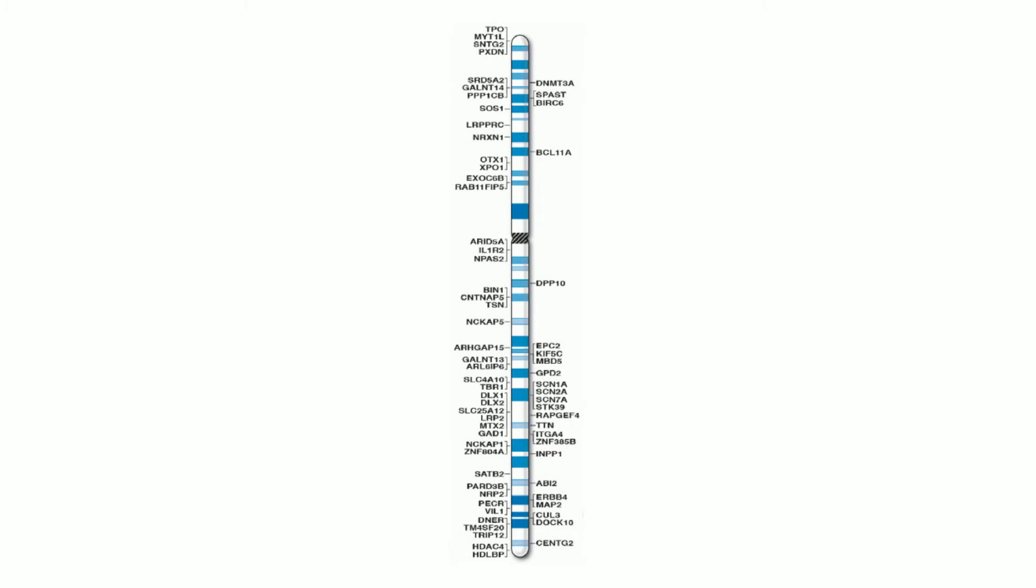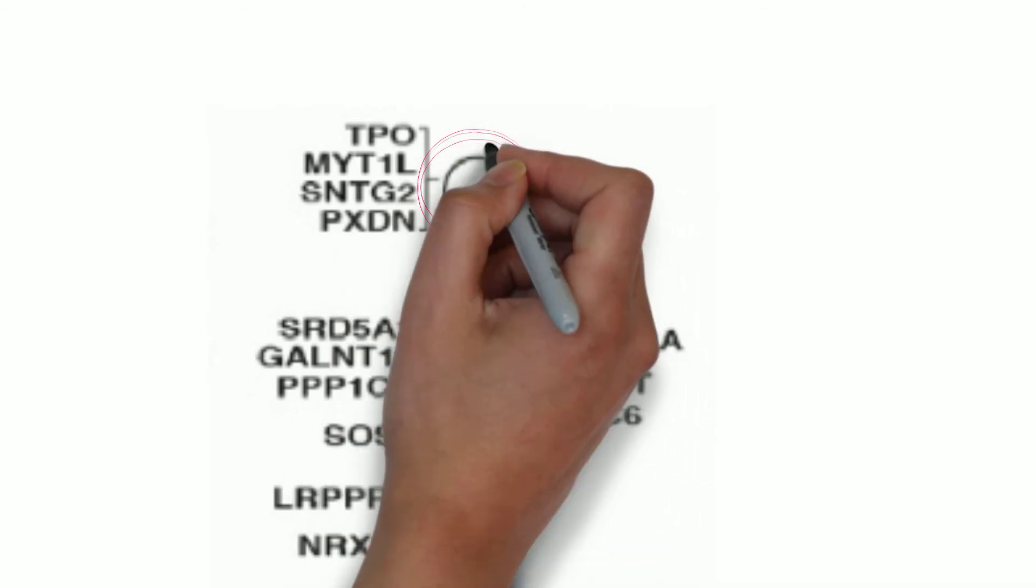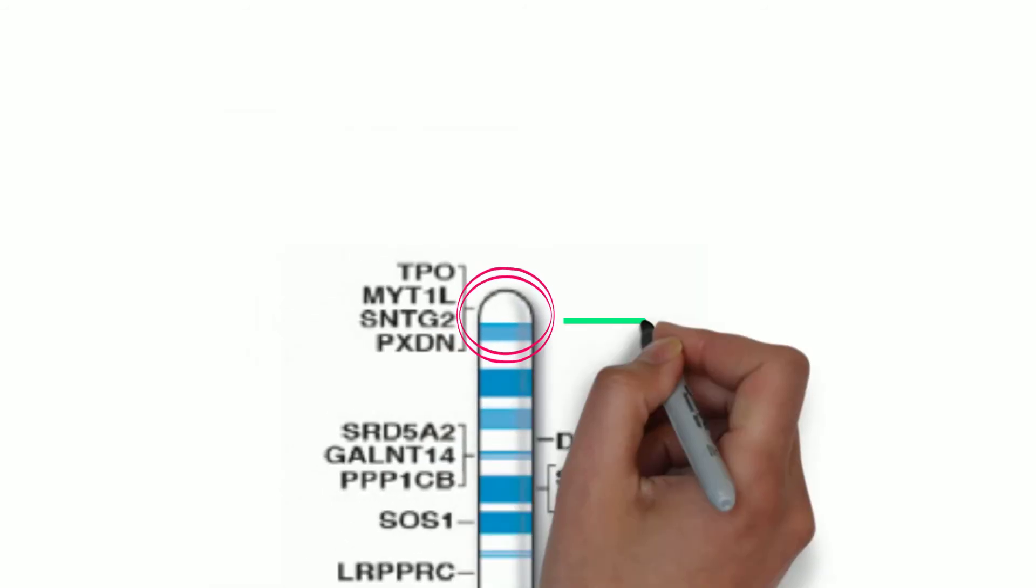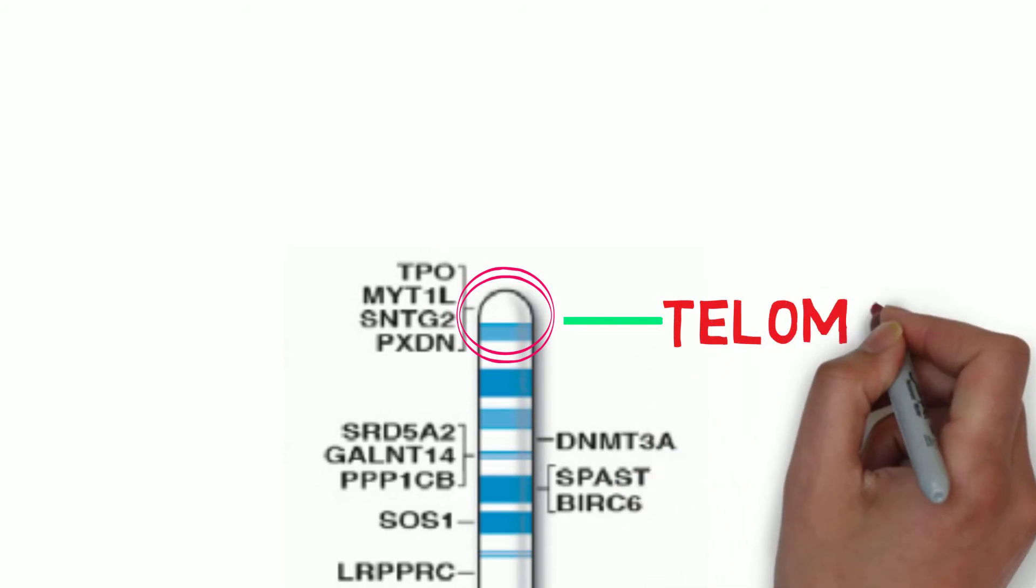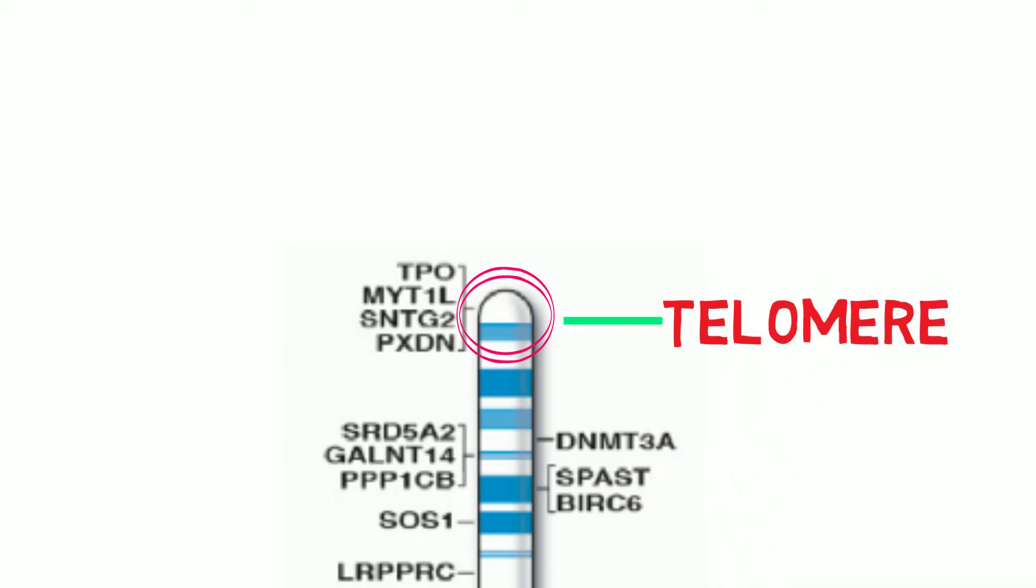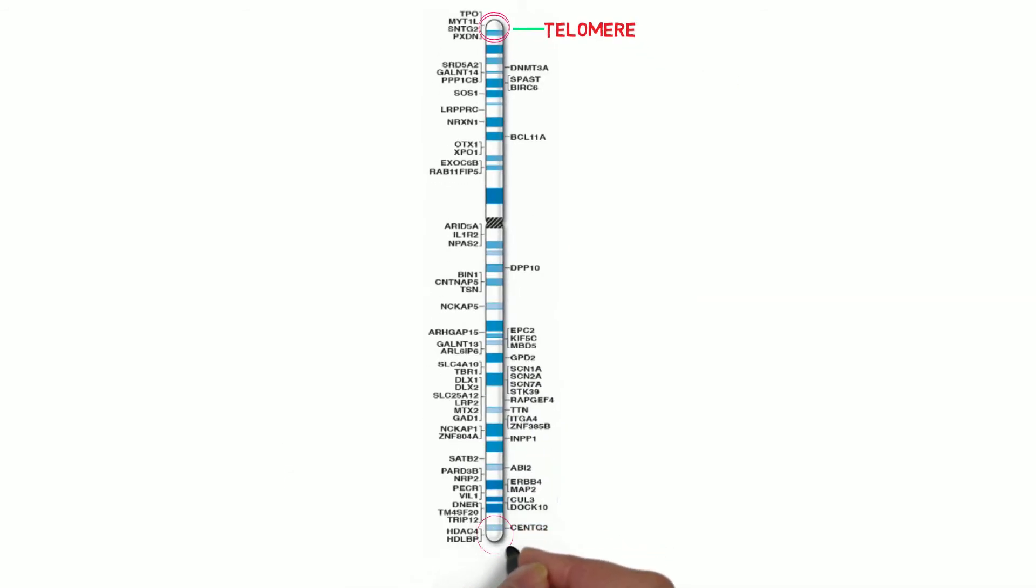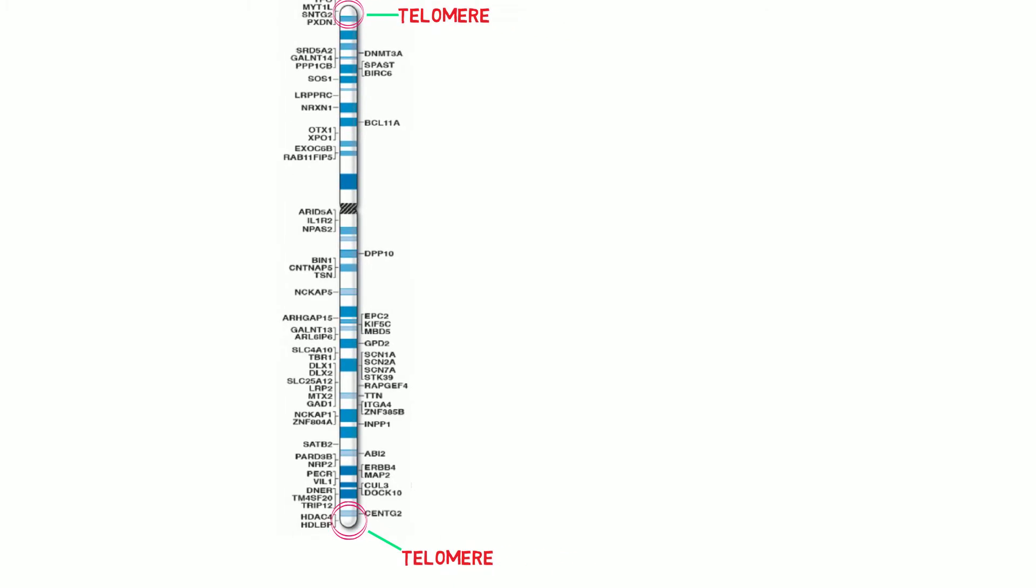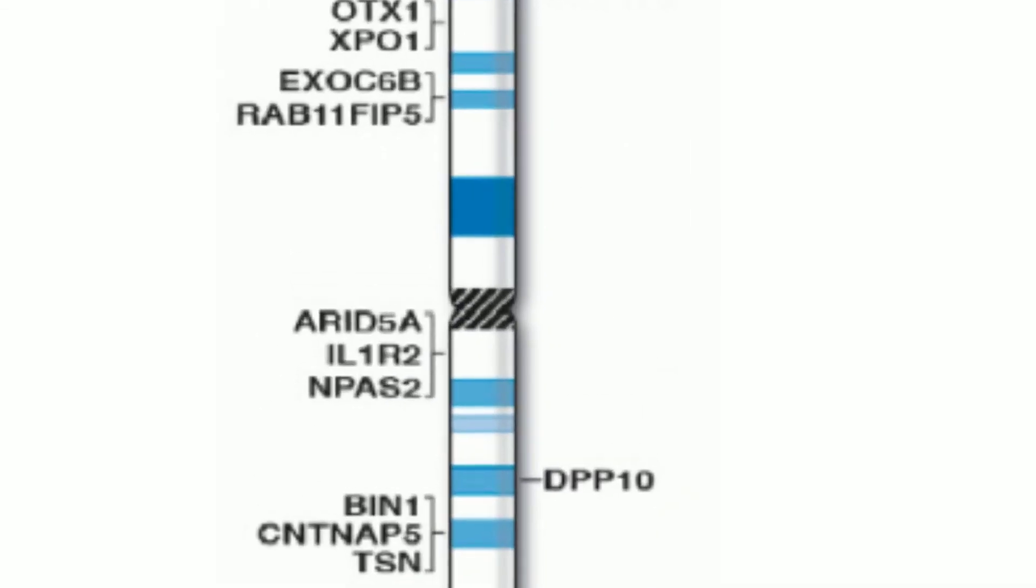In addition to having genes strung along it, a chromosome also has three special sections, sequences of code that have a unique function. At each end of each chromosome, in order to protect it from degradation, there's a special code known as the telomere. The telomere works to block enzymes that would otherwise chew away at exposed ends. So these are two of the special regions of a chromosome, the telomeres, one at each end, and they function to protect it.